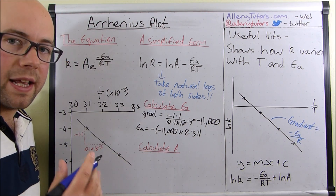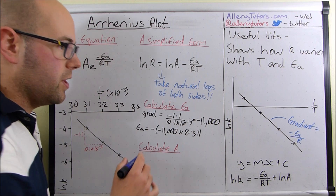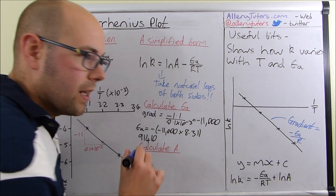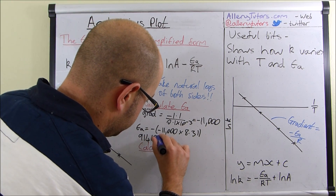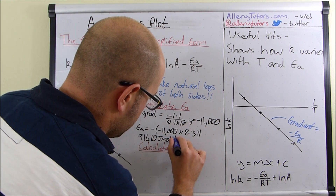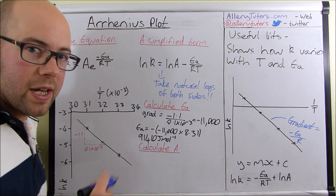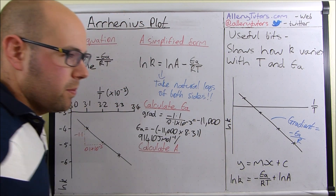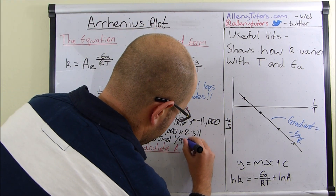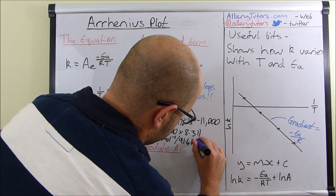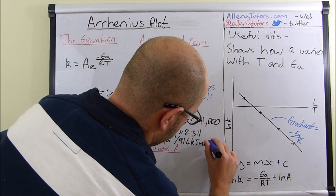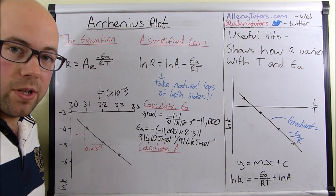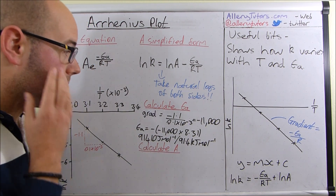We multiply that by our gas constant 8.31, and if we put that into our calculator we get an answer in joules: 91,410 joules per mole. It's probably better to convert that into kilojoules, so to three significant figures that gives us 91.4 kilojoules per mole. That is our activation energy.